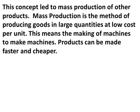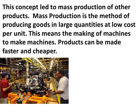This concept led to mass production of other products. Mass production is the method of producing goods in large quantities at low cost per unit. This means making machines to make machines — products can be made faster and cheaper. A good example of how interchangeable parts and mass production are used today is the manufacture of automobiles. Here you see guys assembling an engine on an assembly line using interchangeable parts.